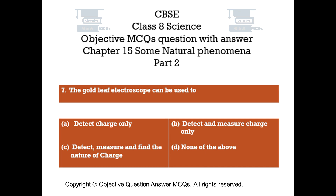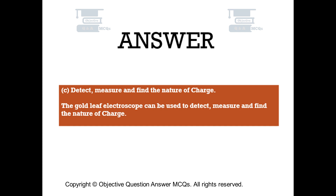Question number 7: The gold leaf electroscope can be used to. Option A: Detect charge only. Option B: Detect and measure charge only. Option C: Detect, measure and find the nature of charge. Option D: None of the above. The right answer is Option C — detect, measure and find the nature of charge. The gold leaf electroscope can be used to detect, measure and find the nature of charge.